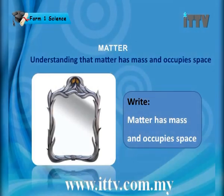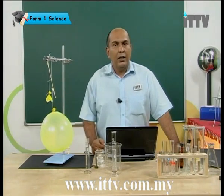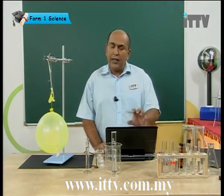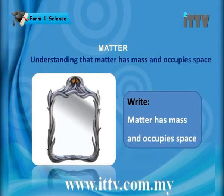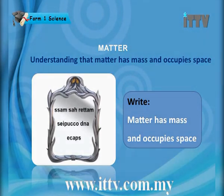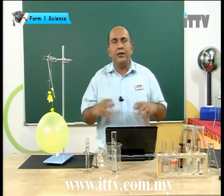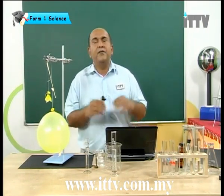This is the tricky part: after you have written down the sentence 'matter has mass and occupies space', can you try to write it as if you were looking at it in a mirror — write it backwards. I'd like you to do that with every major definition you learn in Form 1, Form 2, and Form 3. Writing definitions backwards helps you to remember them.